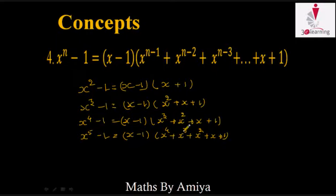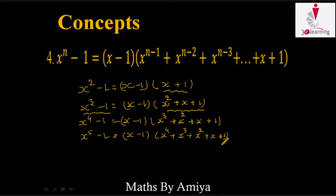By analyzing this factorization of polynomials, we can say (x + 1) is a factor of x^2 - 1, and (x^2 + x + 1) is a factor of x^3 - 1. So we can say that the summation of terms 1 + x + x^2 + x^3 + x^4 + ... with coefficient 1 is always a factor of the corresponding x^n - 1.